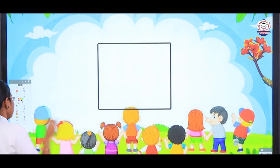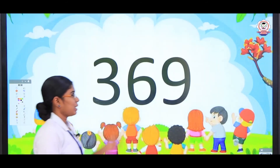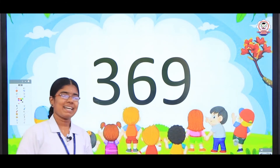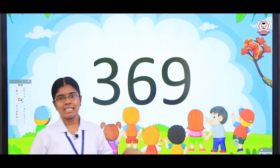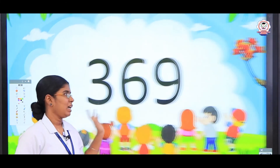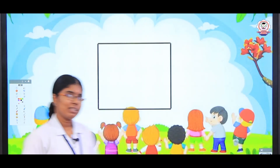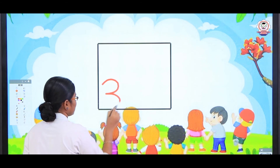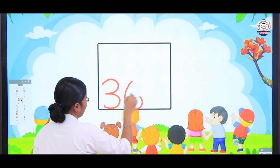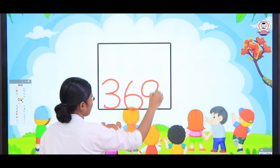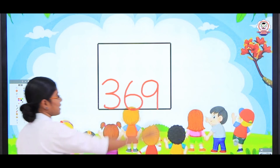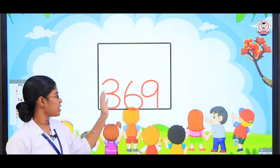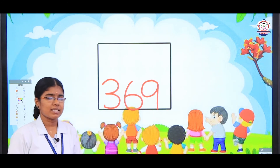The next number is 3, 6, 9 — 369. 369. How to write this number? Let's listen. 3, 6, 9 — 369. Finally, we have reached the number 3, 6, 9 — 369.